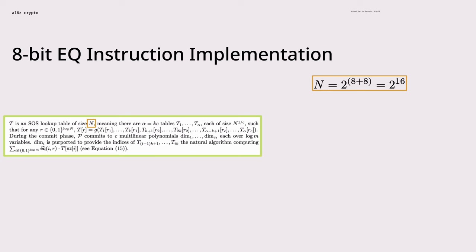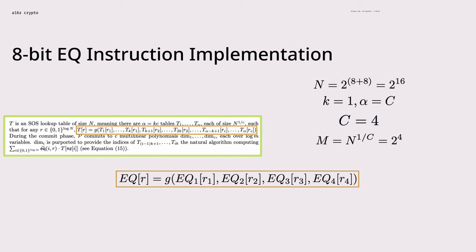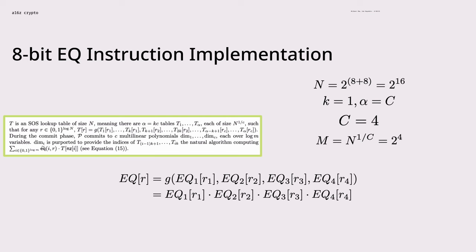First, n is the big table size — 2 to the 16 for 16 bits worth of operands. Then we have parameter k: the number of unique subtable types needed to define a big table instruction. In our case we only need the EQ-prime subtable, making k equal 1 and alpha equal to C. C is the number of subtables — the number of EQ-prime 2-bit subtables used, which is 4. This allows us to define m: the subtable size, equal to n to the 1-over-C, in our case 2 to the 4. Finally we define the collation function g — how you combine subtables into a big table evaluation. For us it's just the product of all subtables: if any subtable is unequal, the entire big table evaluation also returns 0.